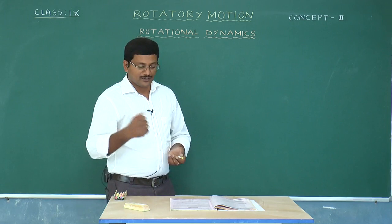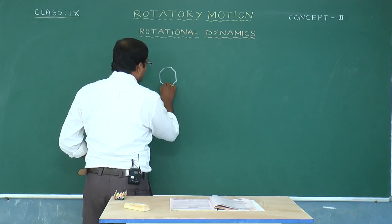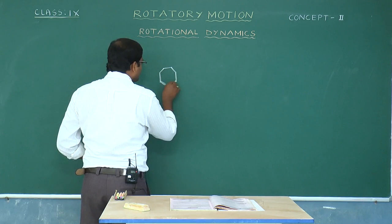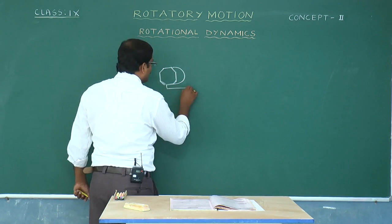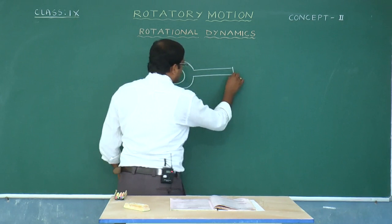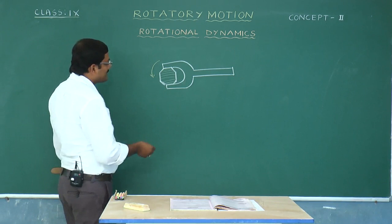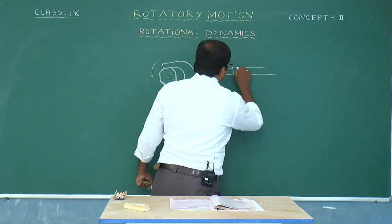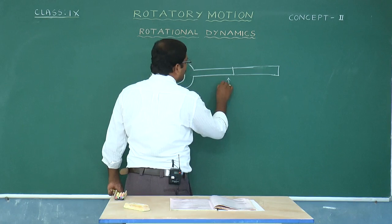When we try to open a nut, we cannot rotate it easily with bare hands, so we use instruments called levers or wrenches. When we use a wrench, it becomes easy to rotate the screw. But when we increase the size of the lever — for example, if we make it double — it becomes even easier to rotate by applying force at the end. So as the lever size increases, it is easier to achieve rotation.